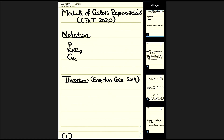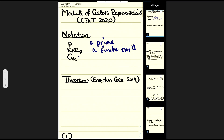Thank you very much for the invitation to speak here. I want to start just by saying a little bit of notation. So P is going to be a prime, and K is going to be a finite extension of the p-adic field Q_p. Like in Jeremy's talk yesterday, this is going to be a talk about local Galois representations — the Galois representations of the Galois groups of p-adic fields. So G_K is going to denote the absolute Galois group of this p-adic field K that we've fixed.